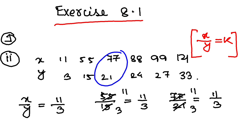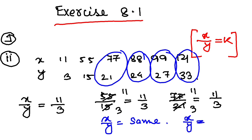As you can see, if you take these two or these two or these two, x by y is the same. That means x and y are in direct variation in this case. If x by y is not the same, then x and y are not in direct variation. That is how you tackle question number one.